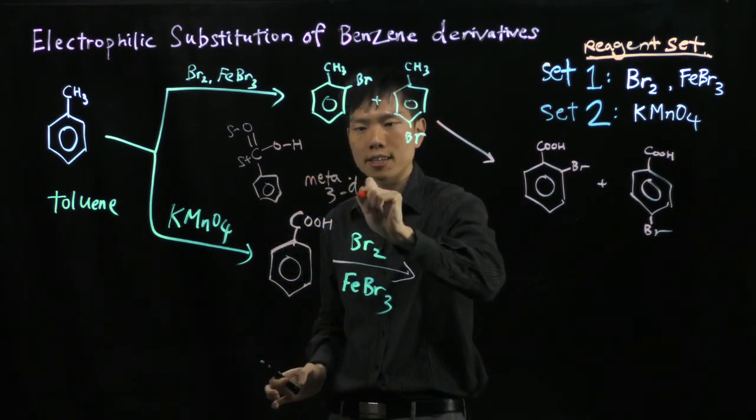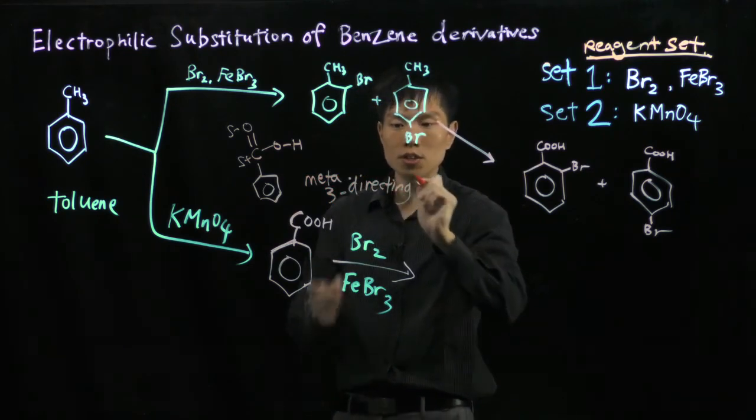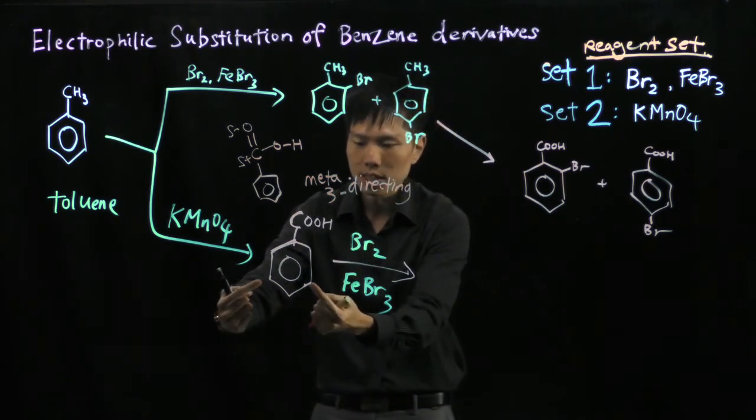This means this group is meta-directing, or 3-directing. It will place the next substituent, the bromine, at the third position.